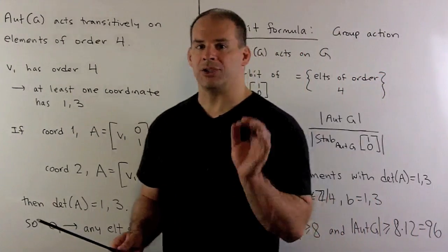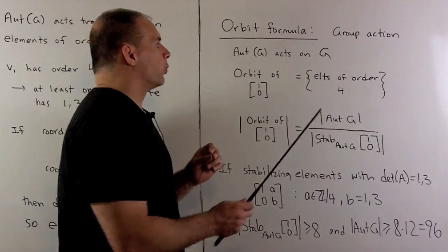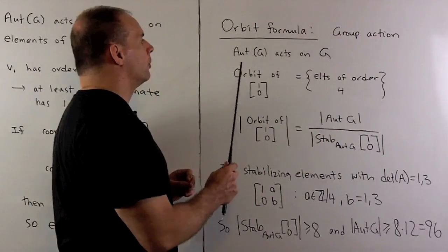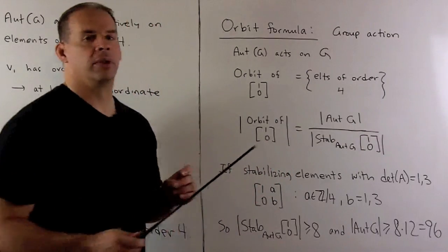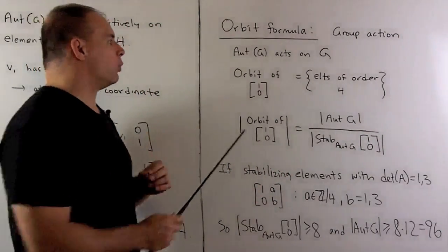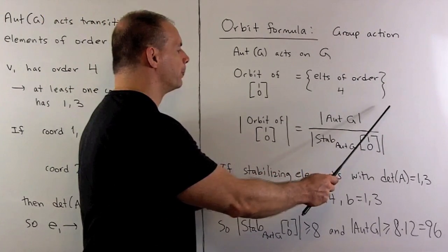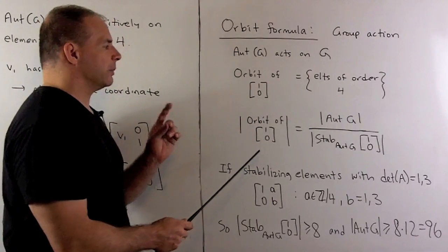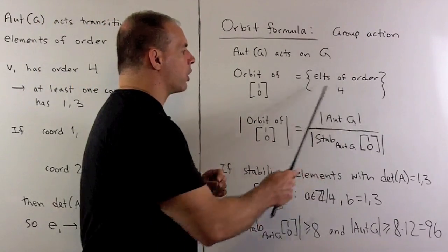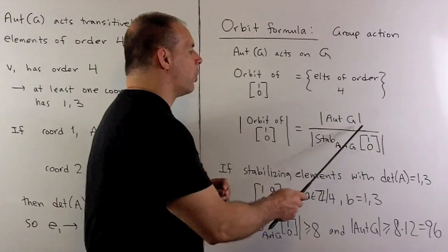Now, let's do some counting. We want to use the orbit formula. We're going to have a group action. So, the automorphism group is going to act on the group itself. We have that the orbit of 1,0 is the elements of order 4. So, the number of elements in the orbit of 1,0 is going to be equal to the order of the automorphism group divided by the order of the stabilizer of 1,0.